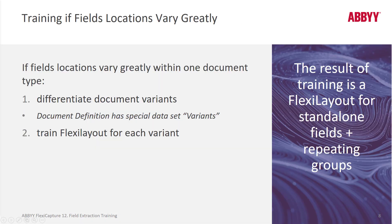If field locations vary greatly — meaning without manually building a layout, just rubber-banding the areas that need to be captured and letting FlexiCapture create a layout based on that rubber-banding activity — and if your documents are quite different from one another, then you may be best served by creating document variants.